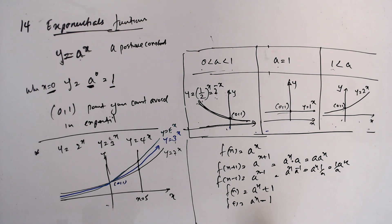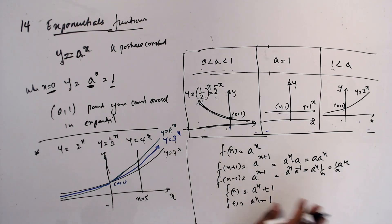Applying transformation knowledge: if f(x) = a^x, then f(x+1) = a^(x+1) = a · a^x — this is the a^x graph multiplied by a. And f(x−1) = a^(x−1) = a^x · a^(−1) = (1/a) · a^x. Also, f(x) = a^x + 1 means shift up by 1, and f(x) = a^x − 1 means shift down by 1. We'll discuss this more later.